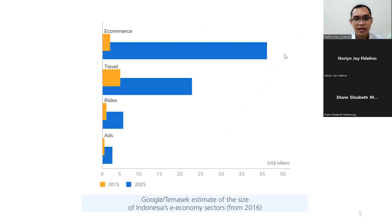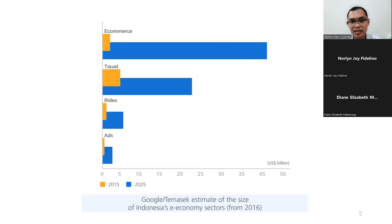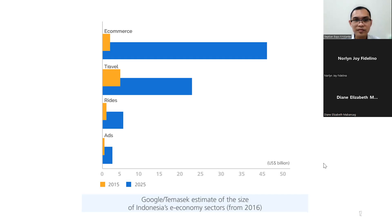From Google Temasek data, we found data on company transaction sizes. In 2016, e-commerce had the highest transactions in Indonesia, followed by travel — because Indonesians like traveling to Southeast Asian countries. There was also online advertising activity. From this data, predictions for 2025 show that e-commerce will be even larger than travel, ride-hailing, and advertising combined.